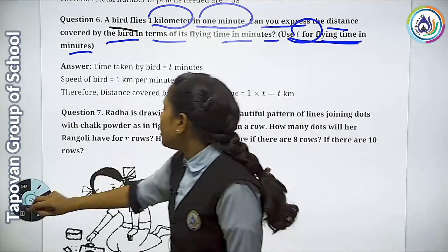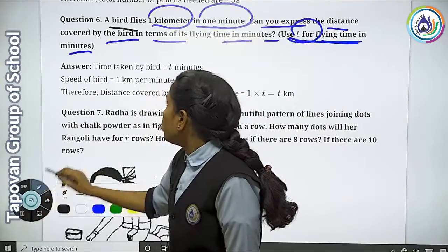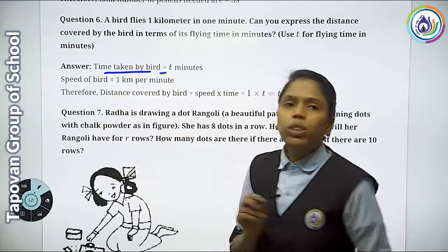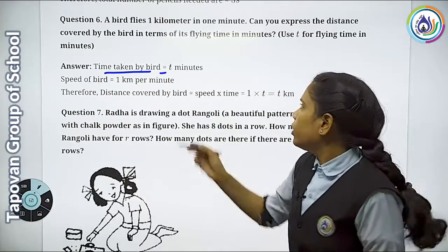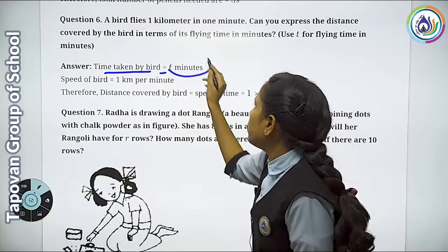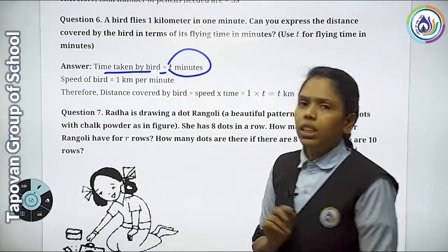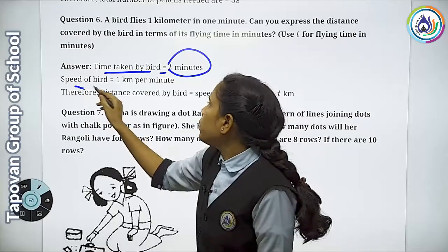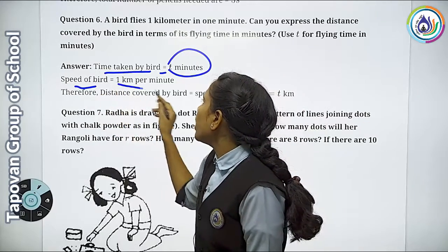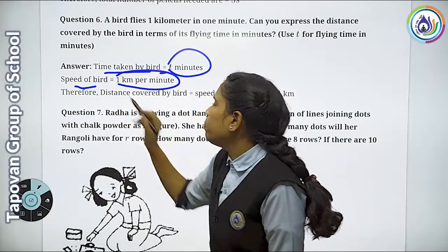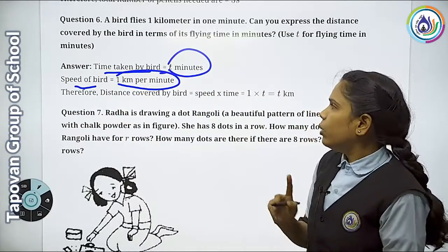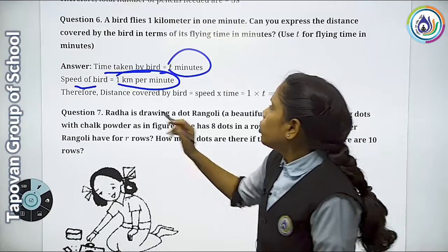So let's start. Time taken by bird — in how much time is it covering? It covers in T minutes. Now the distance: the speed is 1 kilometer per minute, which is given to us in the question. Therefore, the distance covered by the bird...